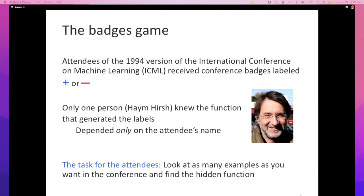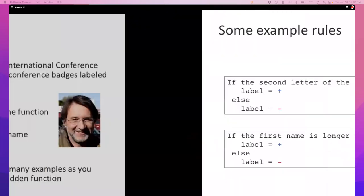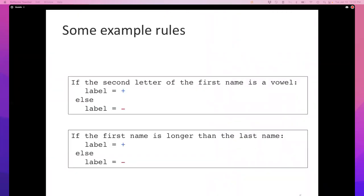So that's the game we are going to play. I'm not going to give you name tags — I don't know all your names yet, though one of my goals for this semester is to know all your names. Some of the rules that could have been used were things like: if the second letter of the first name is a vowel, then the label is a plus, otherwise it's a minus. By the way, that was the rule used in that conference.